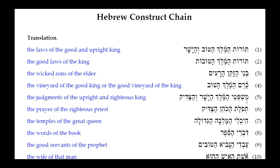We want to look for these construct plural endings — this is the masculine construct plural ending telling us these two nouns are in construct with each other. Mishpate is the construct noun and HaMelek is the absolute noun.